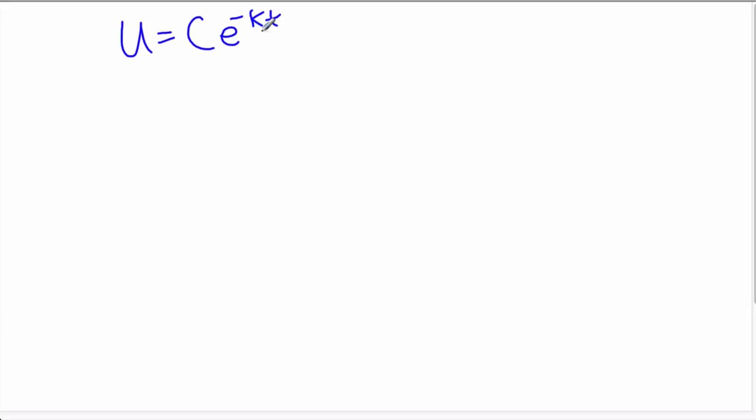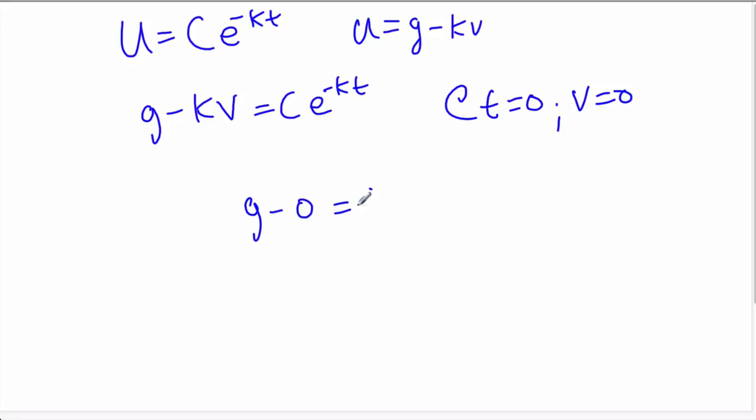I think it's probably time to plug back in our u value. u equaled g minus k times v. So now we've got g minus k times v equals our constant of integration, e to the negative k times t. This was a free fall scenario where at time equals zero, the velocity was zero. That means g minus zero equals c times e to the zero. This expression is now one, which means that g equals c.